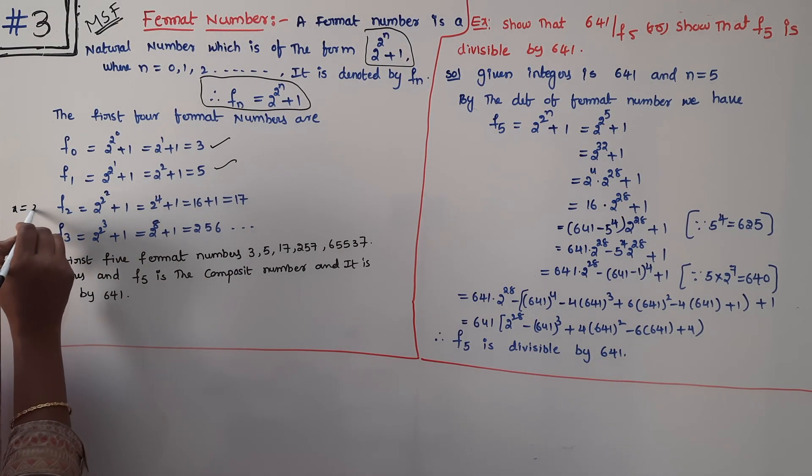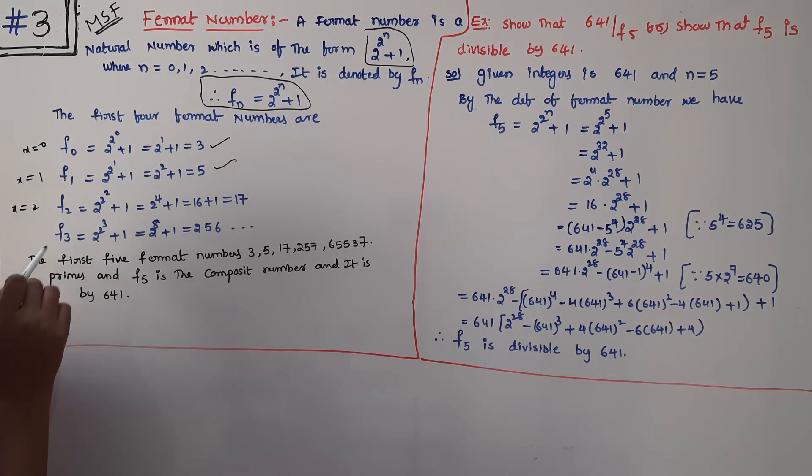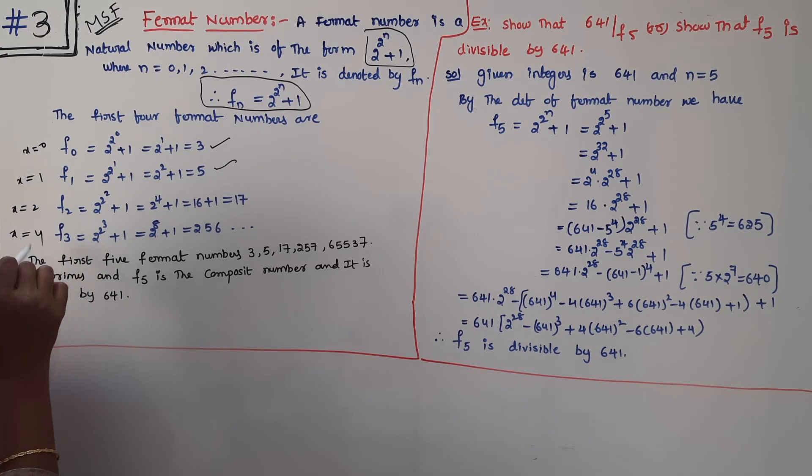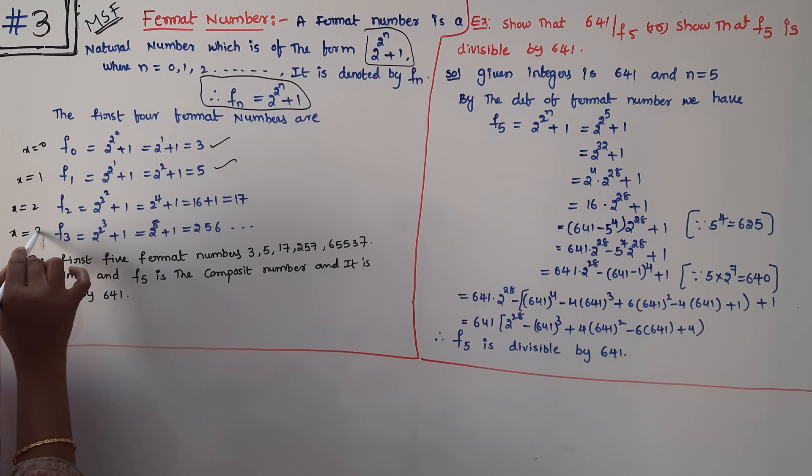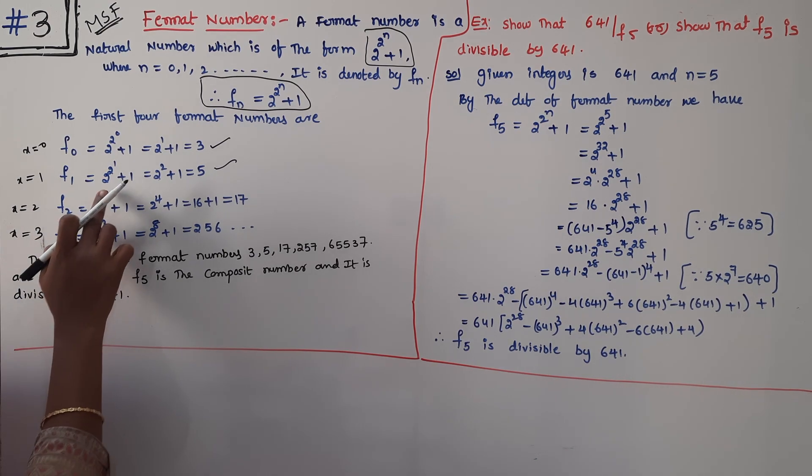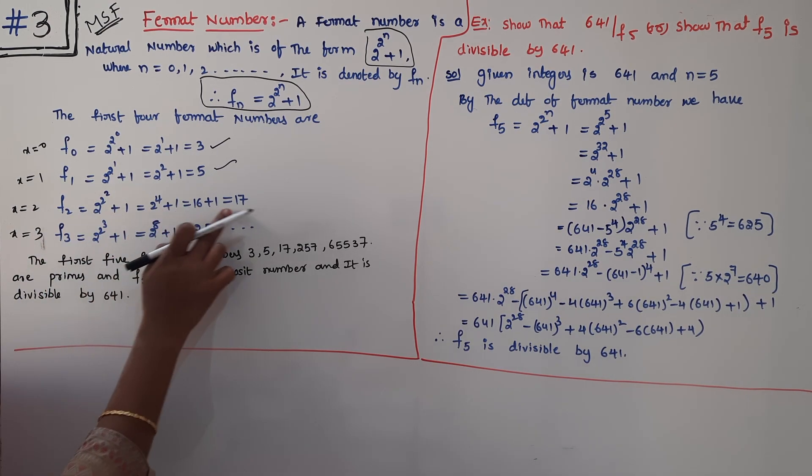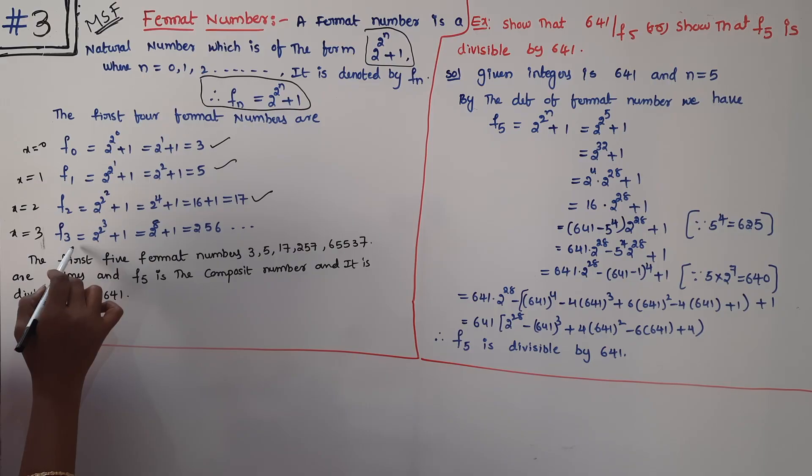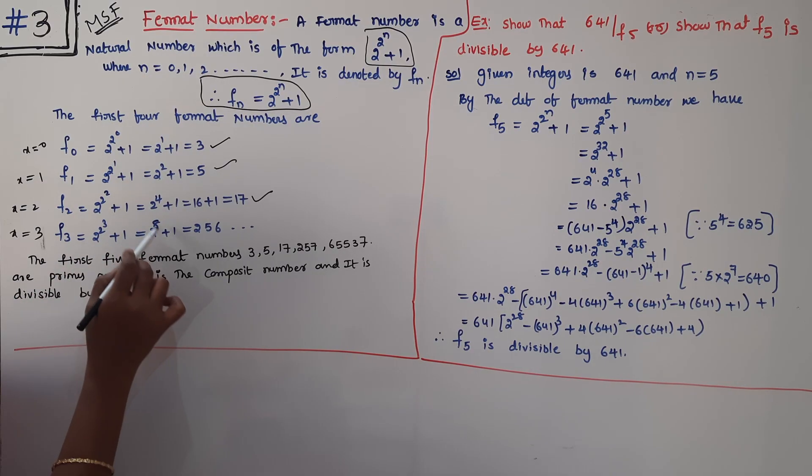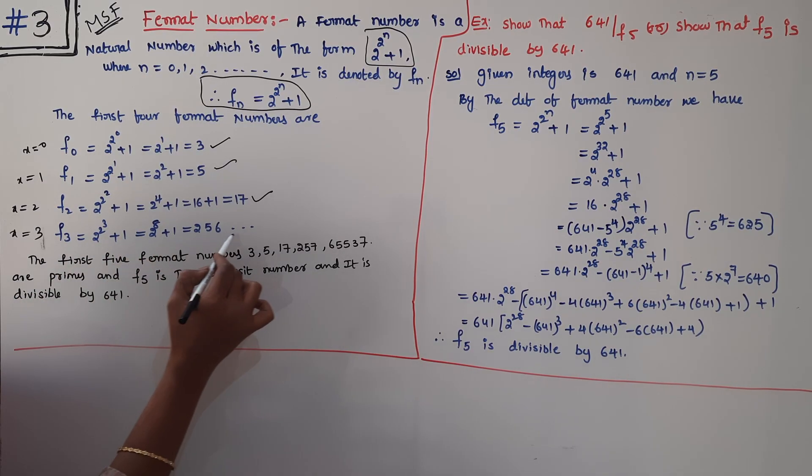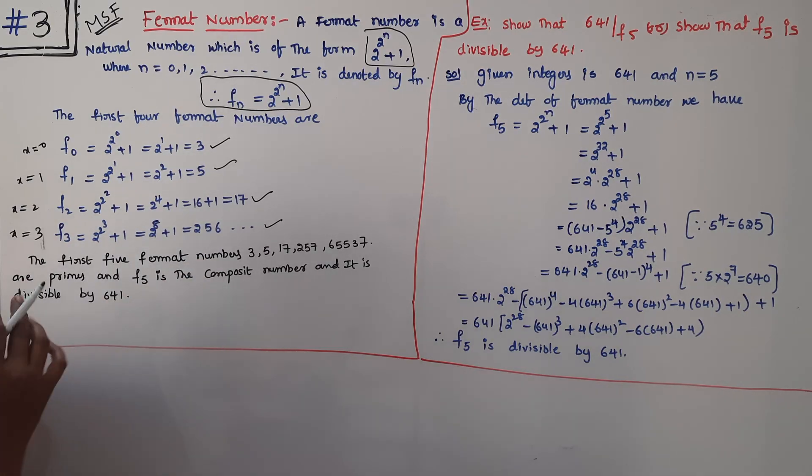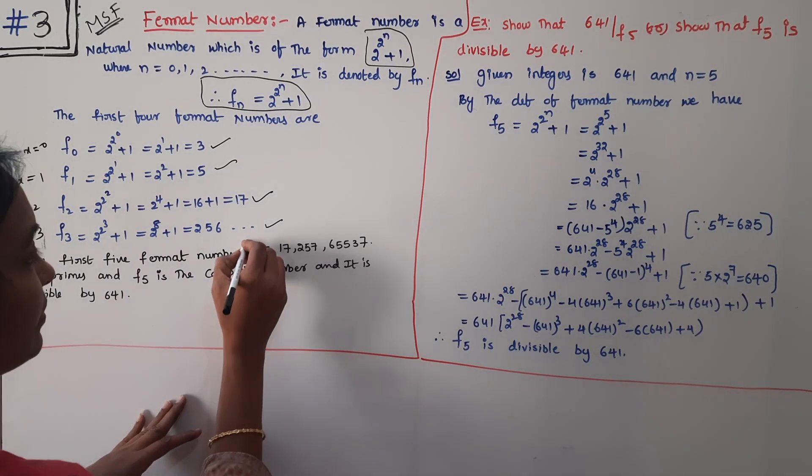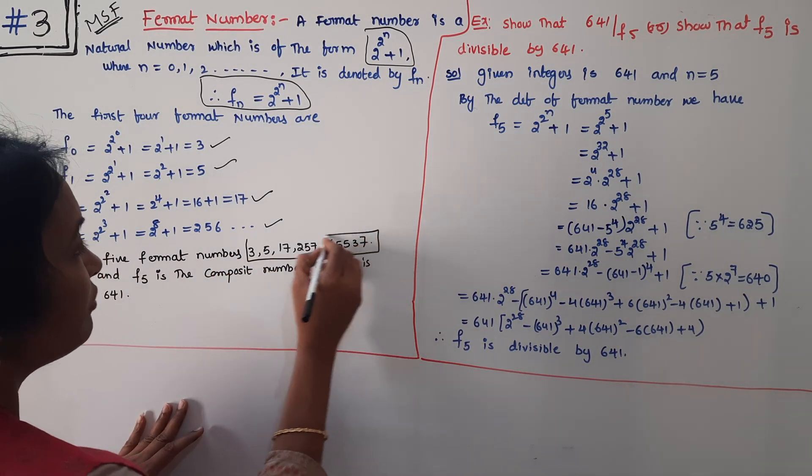Next, F_2: n is equal to 2. Now 2^4 is 16, 16 + 1 = 17. In this process, F_3 is 2^8 + 1, which is 256 + 1 = 257. Actually, the first five Fermat Numbers are 3, 5, 17, 257, and 65537.